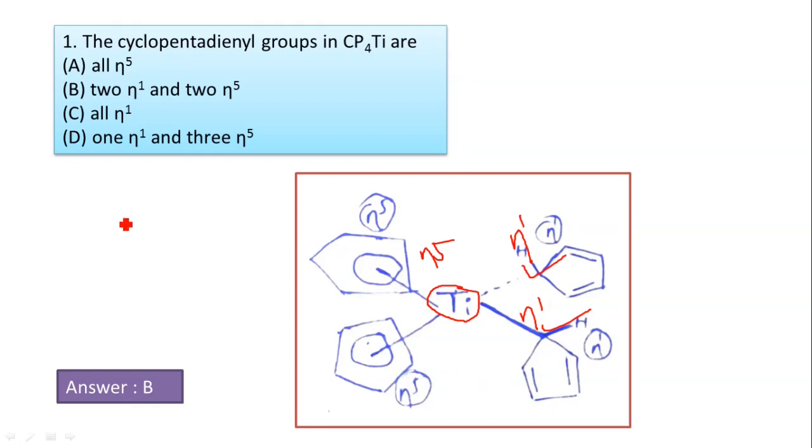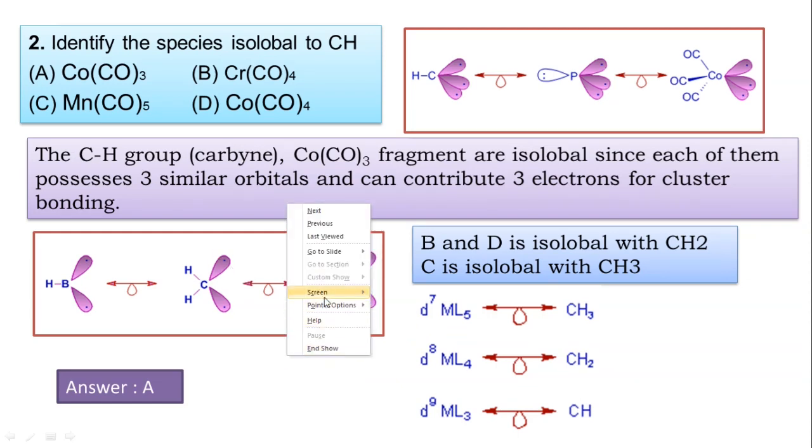Second question: Identify the species isolable to CH group. The CH group is a carbyne group. The Co(CO)3 fragment is isolable since each of them possess three similar orbitals and can contribute three electrons for cluster bonding.